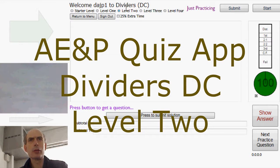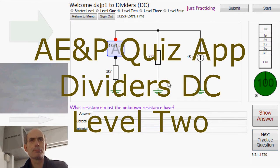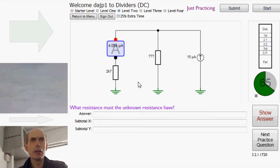This time, looking at dividers level 2. OK, what resistance must the unknown resistance have? And it's a current divider.